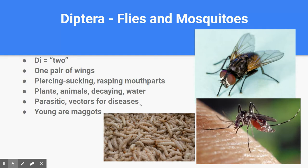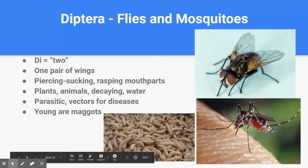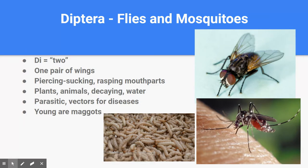Flies and mosquitoes can be found on plants, animals, or decaying material depending on the type, which is why we shoo them from our food. They are vectors for disease — you're probably familiar with malaria or West Nile virus carried by mosquitoes. Some are even parasitic, drinking the blood of others — mosquitoes and horseflies do that. These insects get a bad reputation, probably the most despised in the insect world. The young are maggots, which you've likely seen on decaying animals or plant material like grass clippings.